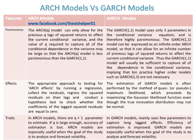The GARCH(1,1) model can be expressed as an infinite order ARCH model, so that it can allow for an infinite number of previous lags of squared returns to affect the current conditional variance. Thus, the GARCH(1,1) model will usually be sufficient to capture all of the dependence in the conditional variance, implying that in practice higher-order models such as GARCH(2,3) are not necessary.